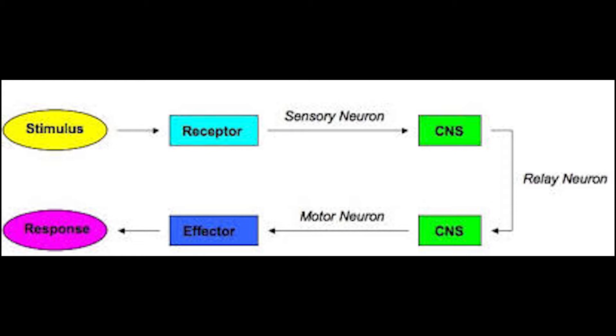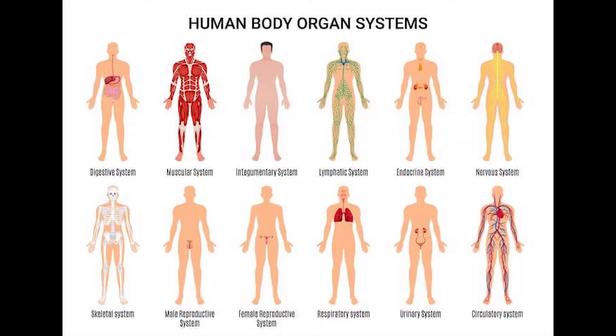Here we have a diagram of the stimulus response pathway. We can see the receptor, the stimulus, the effector, the response, and the neural pathway.